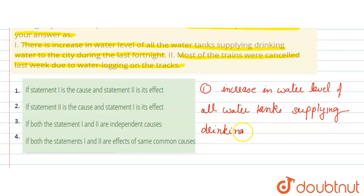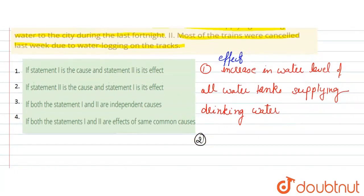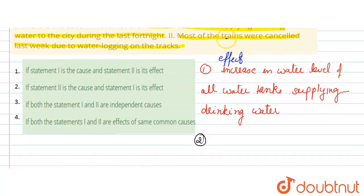In statement 1, the water level has increased, so there must have been some reason, some cause for this - that means this is an effect. Then next, if we talk about statement 2, most of the trains were cancelled.